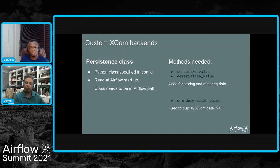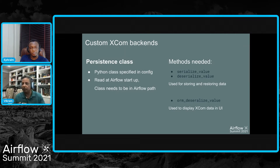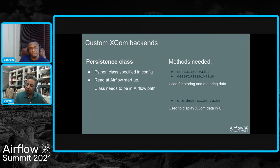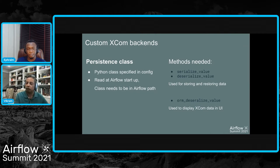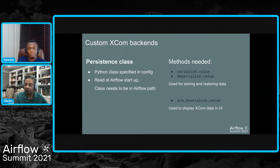Custom XCOM backends work by defining your own Python class for overriding how XCOM data is persisted and retrieved. This class is specified in the Airflow configuration file, airflow.cfg, and is read at Airflow startup so it needs to be in the Airflow path. There are really only three methods to worry about: serialize_value and deserialize_value for storing and retrieving data from wherever you choose to store it, and a third ORM method to display stored XCOM data in the user interface. For large data sets, you may not want to display full data in the UI, as it could crash it — instead you'd return a pointer to the storage location.